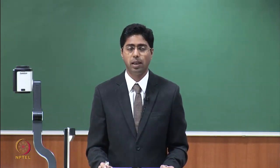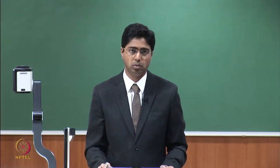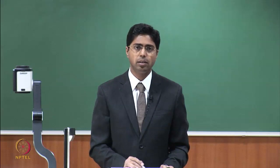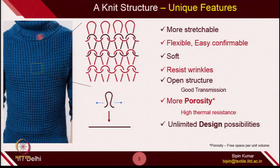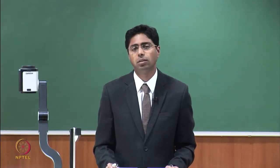Knitting also gives you a unique possibility to create any design on the surface of the fabric. You can see in the photo itself — the main body looks different, but if you see the collar, it looks completely different. Both of these parts of the garment contain loops only, but the designs are completely different. So there are unlimited design possibilities in the case of a knitted structure. We have seen why this knitting structure is so popular — it gives you additional benefits which most other textile structures cannot provide.